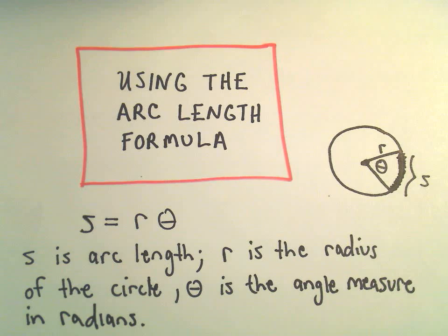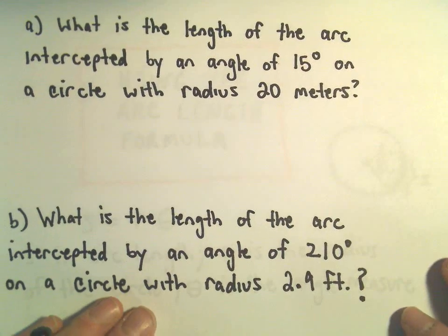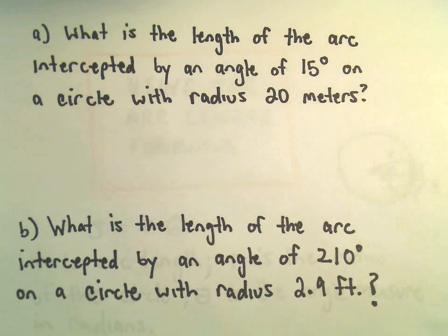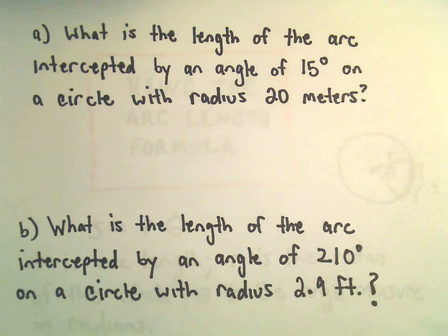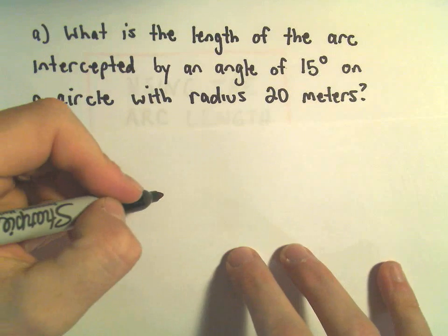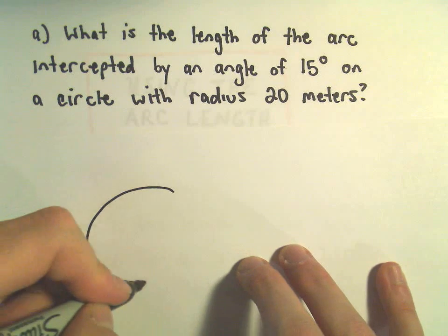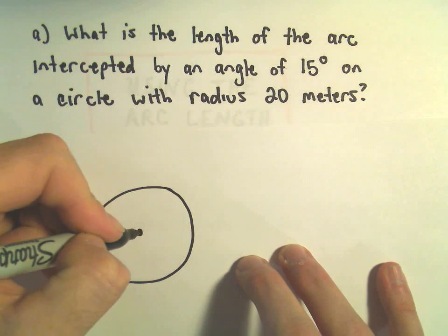Okay, so a couple problems dealing with this, nothing at all too complicated at all, hopefully. Part A, we're going to find what's the length of an arc intercepted by an angle of 15 degrees on a circle with radius 20 meters. Basically same idea as before, we've got, you know, there's a terrible circle.